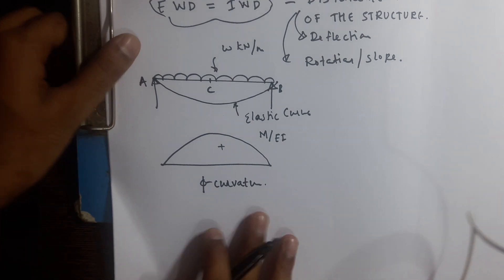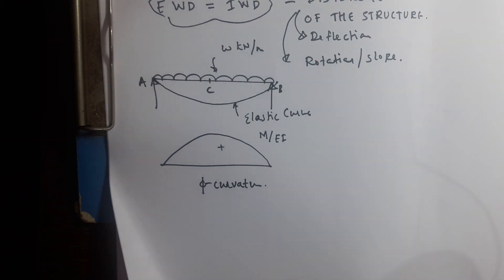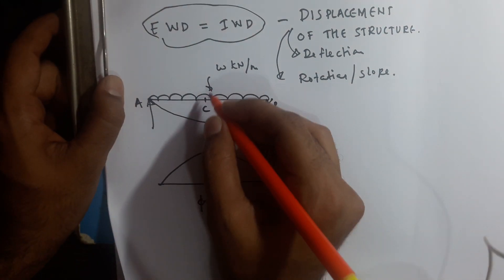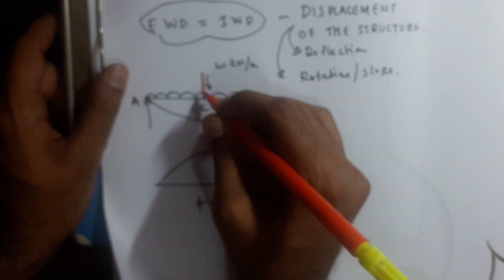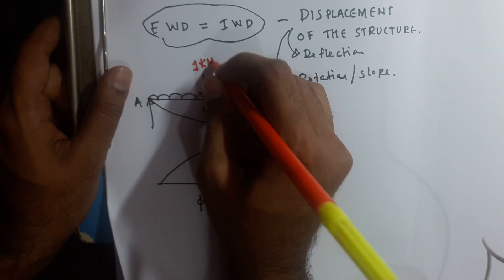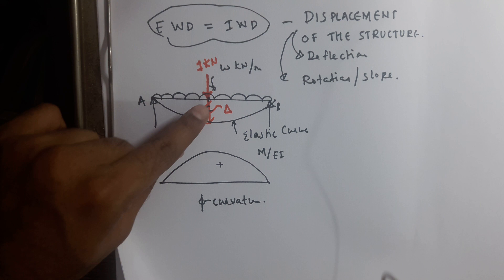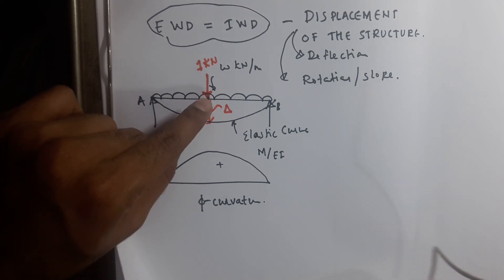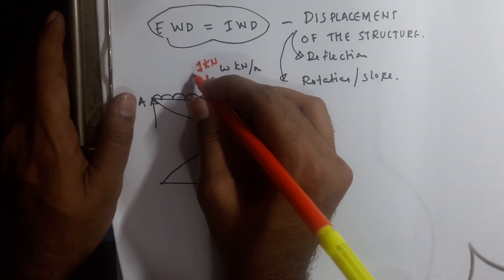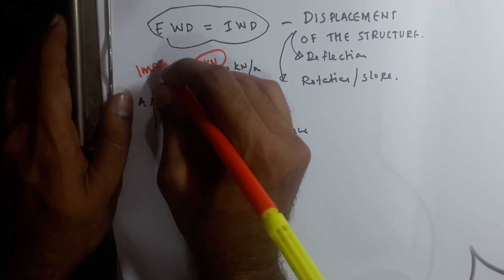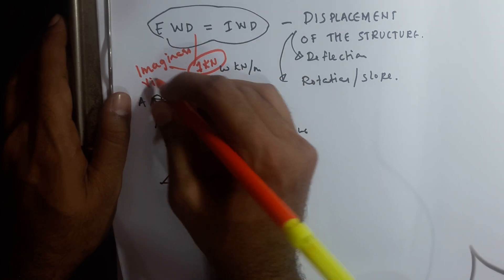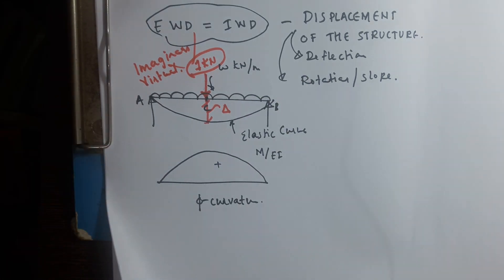I want to find deflection at C by the unit load method. For that I have to apply a unit load at C, and this delta is what I have to find. To find deflection at C, you apply a unit load — this unit load is an imaginary load, also called a virtual load or dummy load.